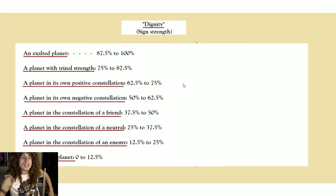A planet in its own positive constellation, that's an air or fire constellation. For example, for Saturn that's Aquarius, for Venus that's Libra, for Mars that's Aries, for the Sun that's Leo, for the Moon that's Cancer, and for Mercury that's Gemini.